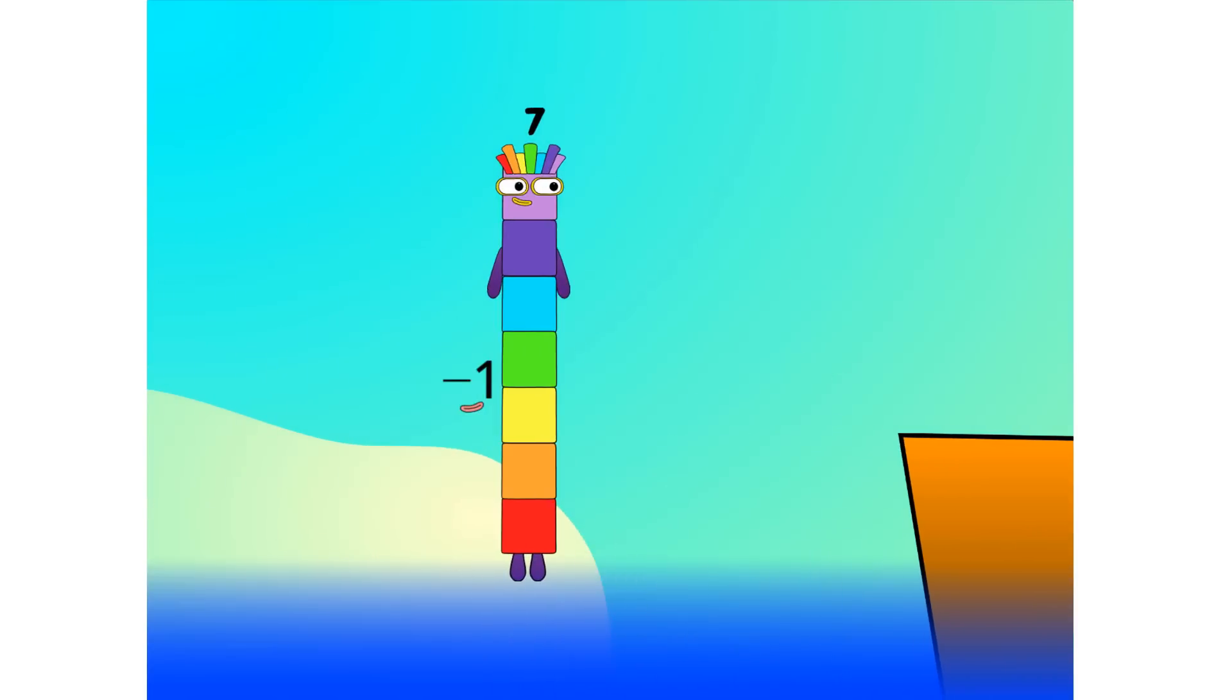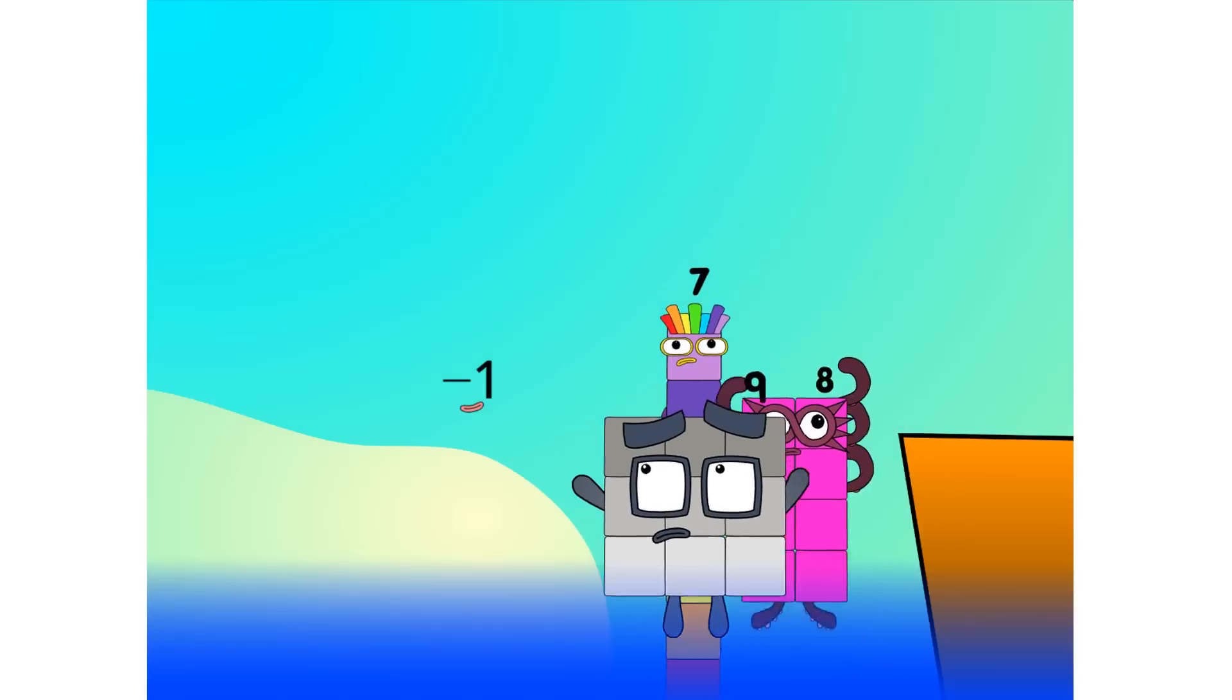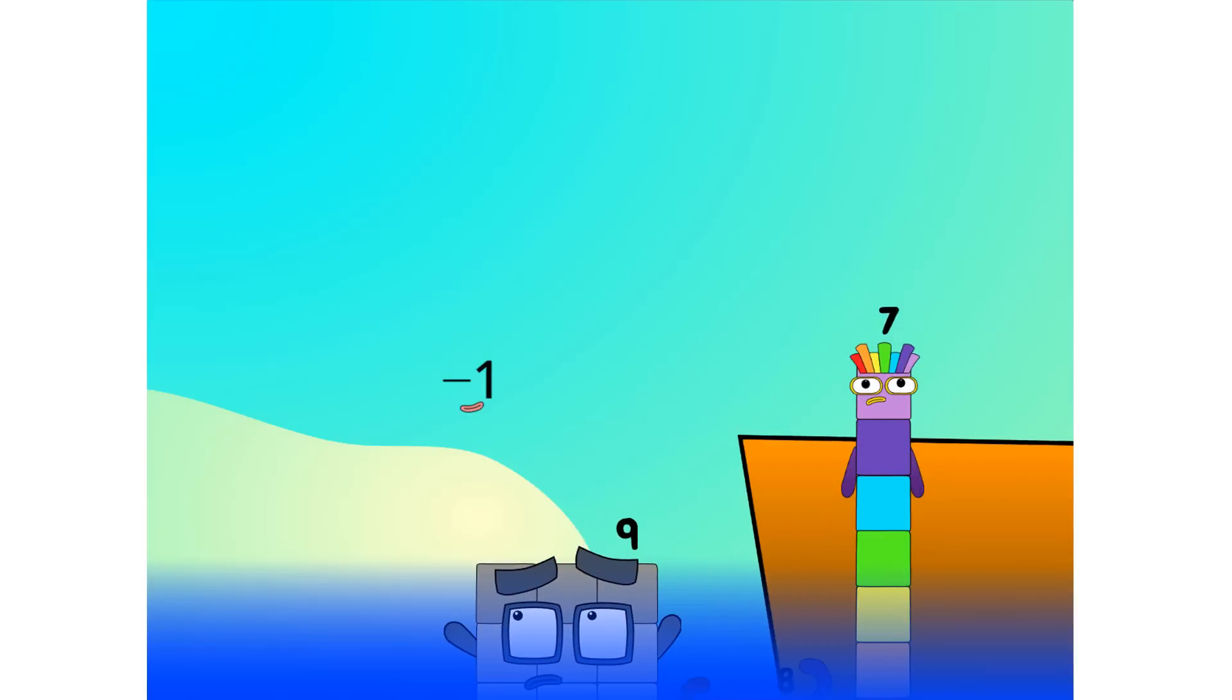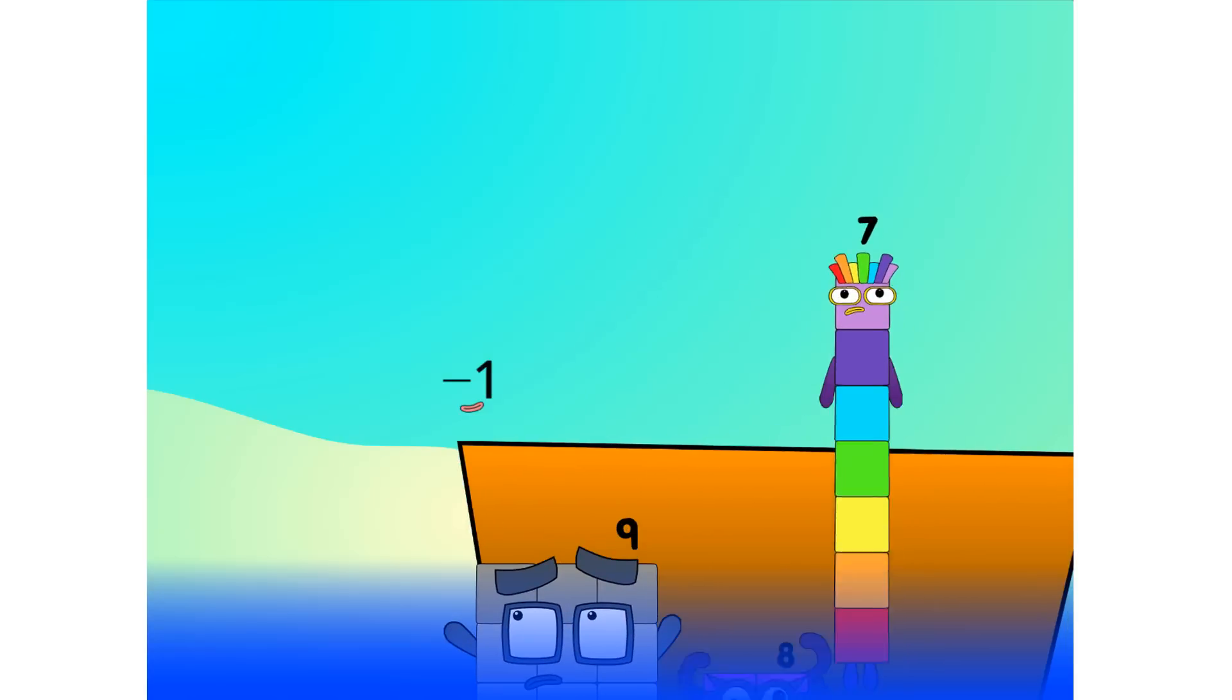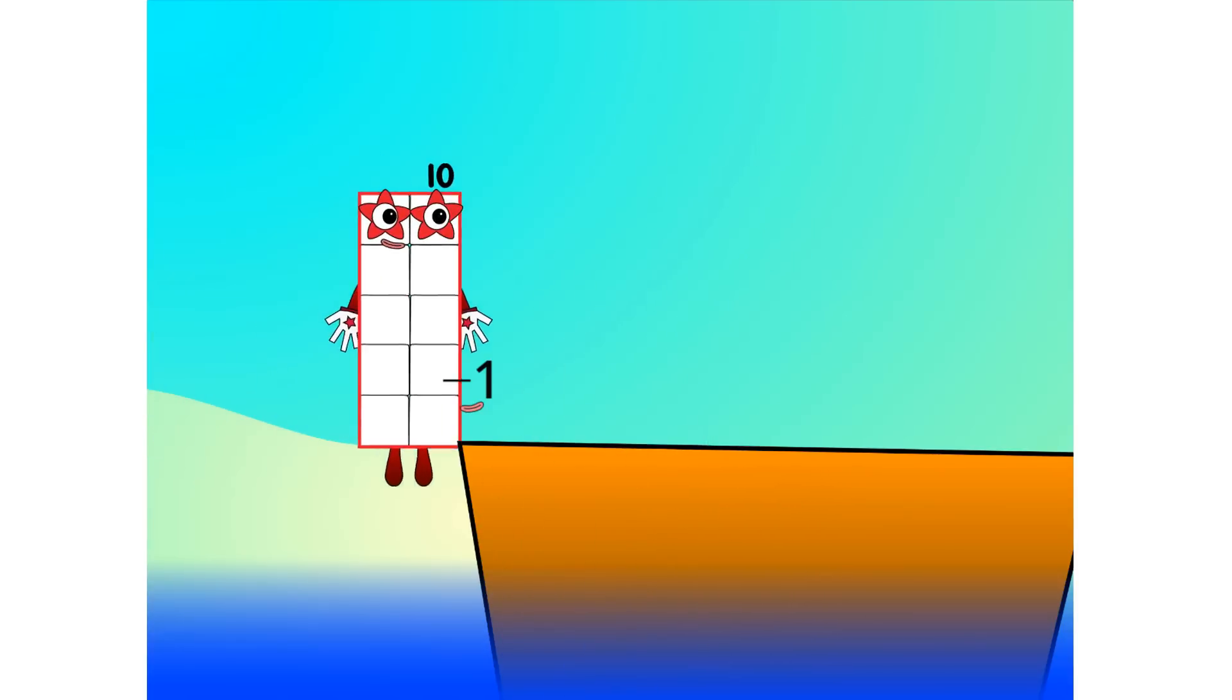Alright, me hearties, into the boat you go. I have 40 numbers. Number 0, 1, 2, move along lads. 3, 4, 5, 6, 7, step lively. 8, smartly now, move along. 9. Blow me down, numbers overboard! Hang on lads, it's a good thing you know how to swim. Let's go me hearties, 10.